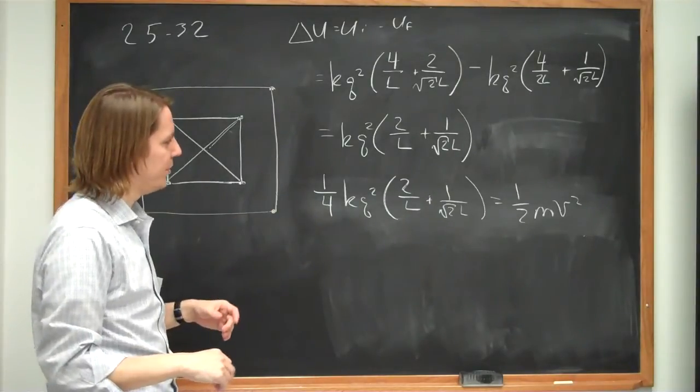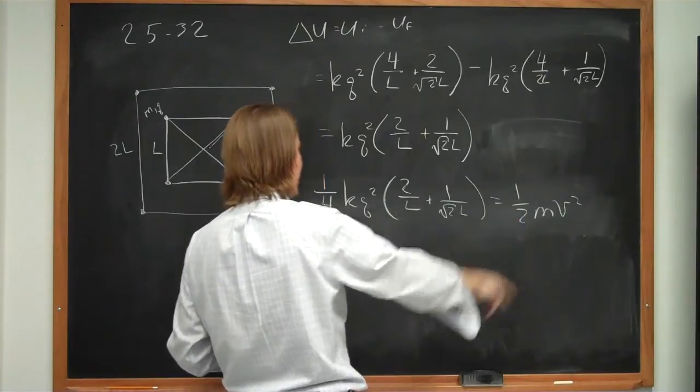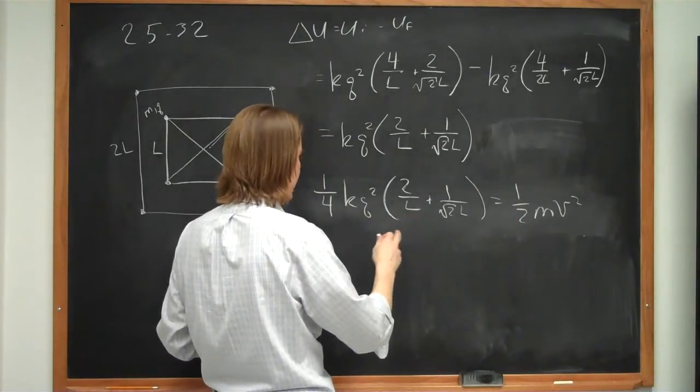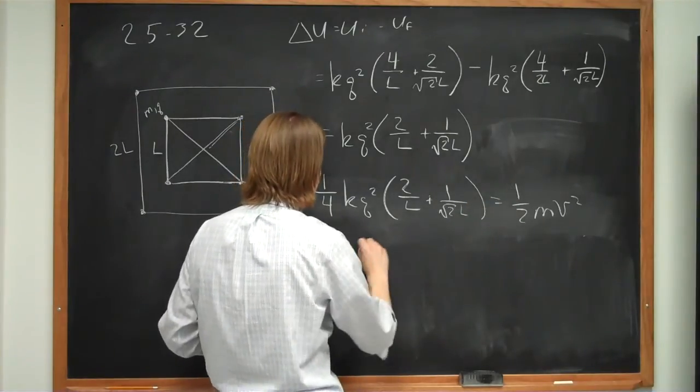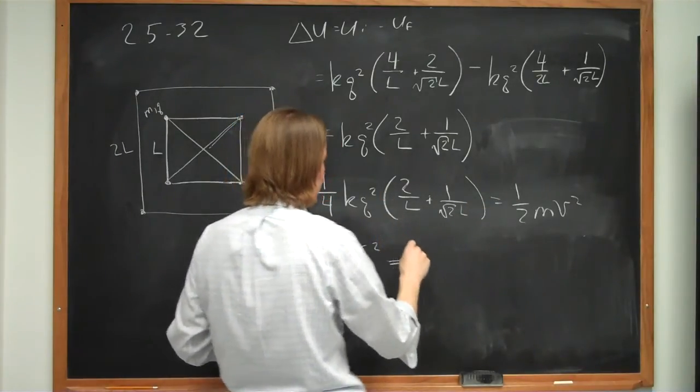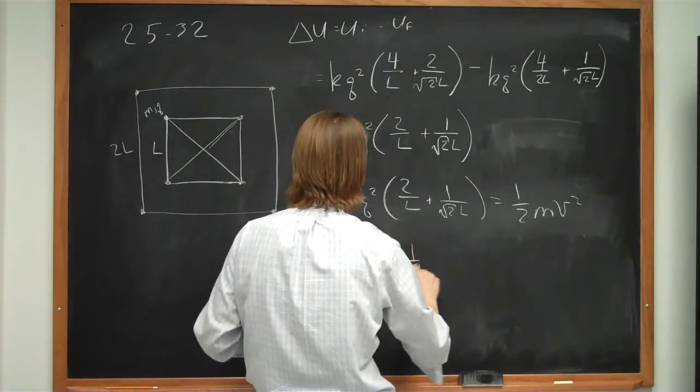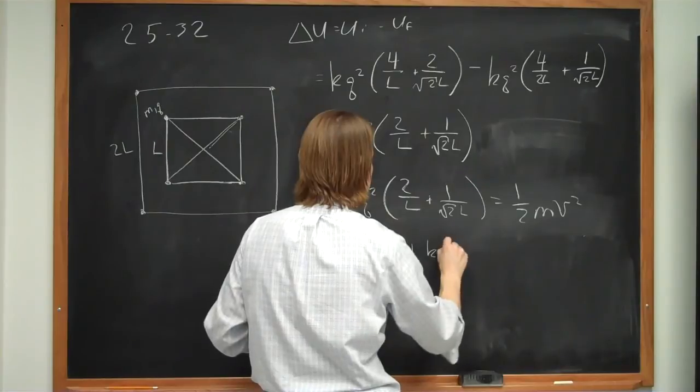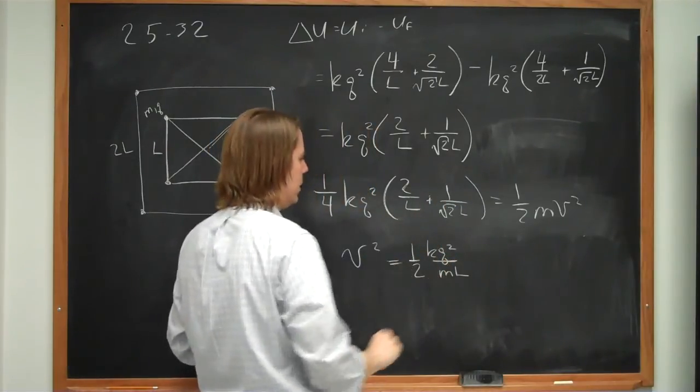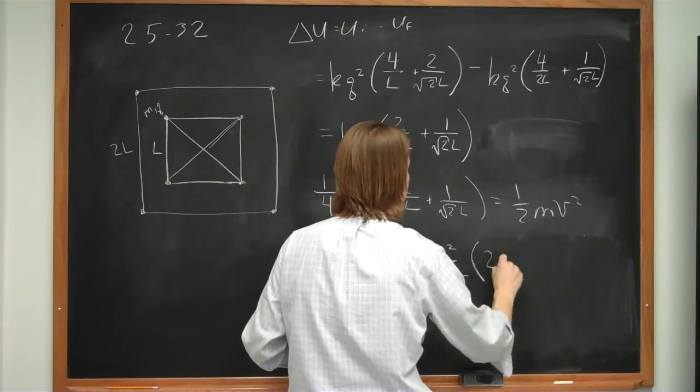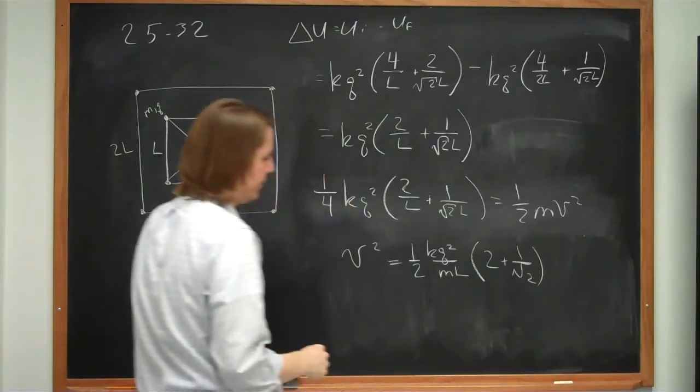So all we did is take a fourth of it. And now we're just going to start combining things. Bring the m under here and bring the 1 half under, it's multiplied by 2. And you can go ahead and distribute it in there. I'll just do some of that all at once. And you get v squared equals what? That'll make that 1 half again. kq squared over ml. And let's go ahead and bring the l out, 2 plus 1 over the square root of 2.